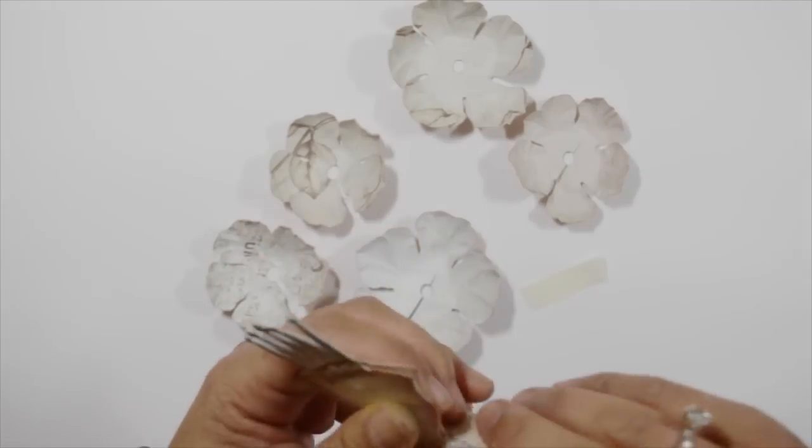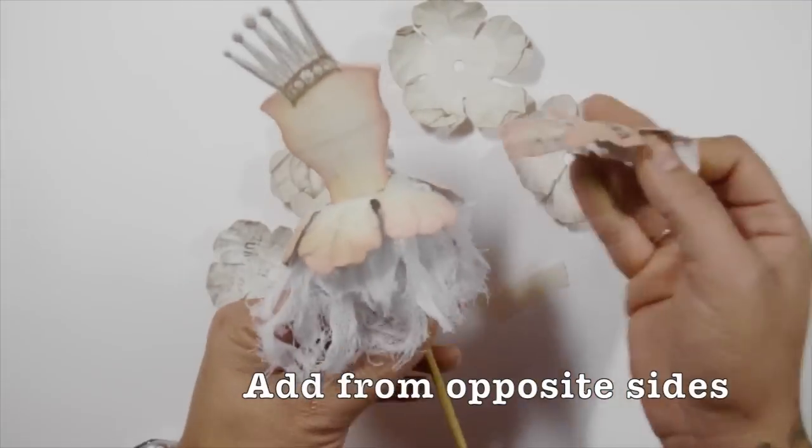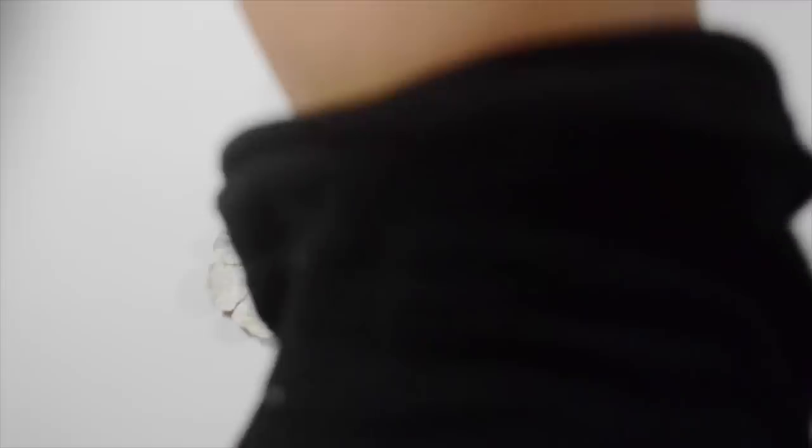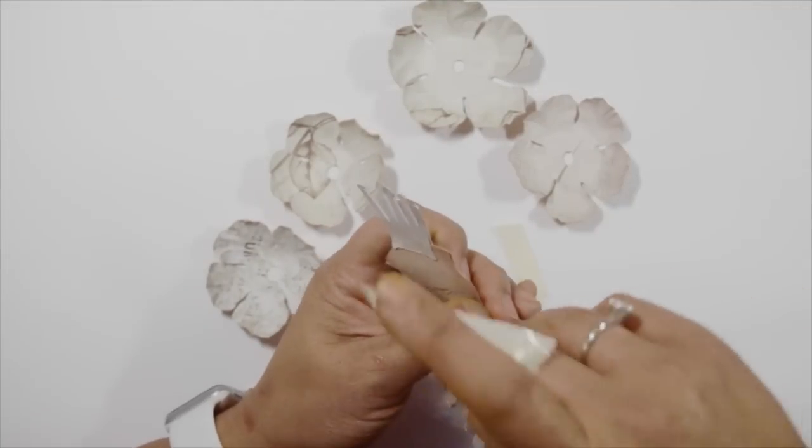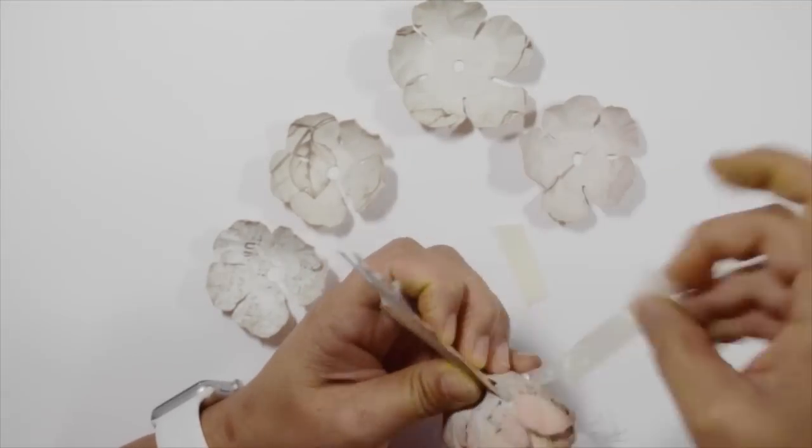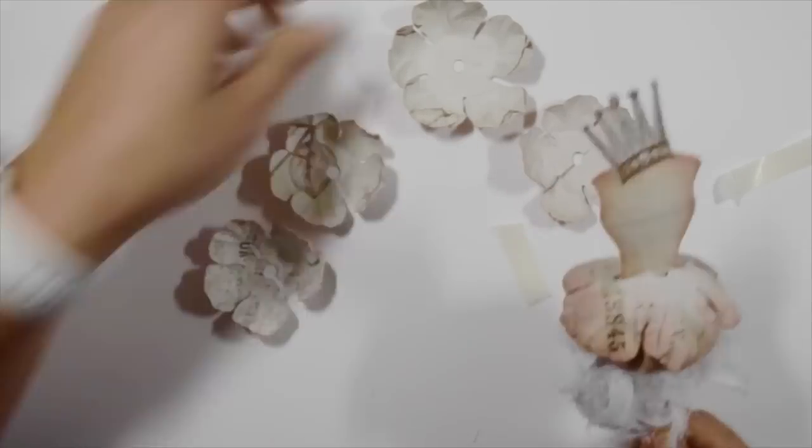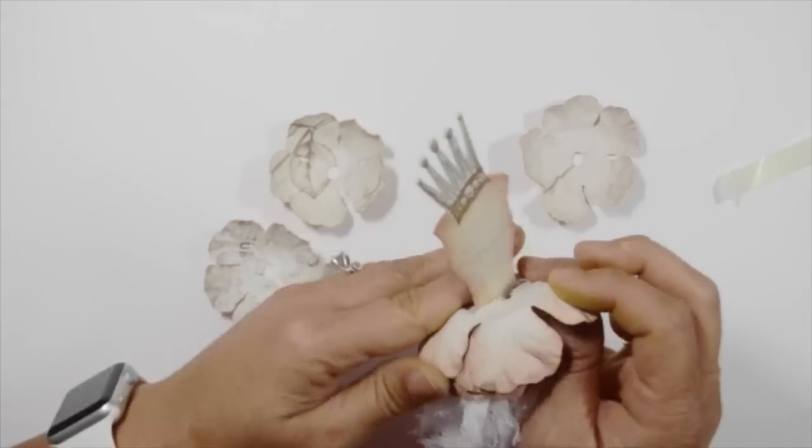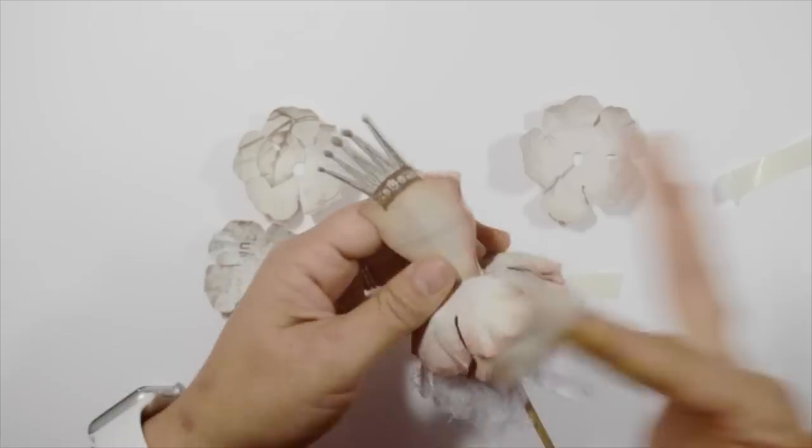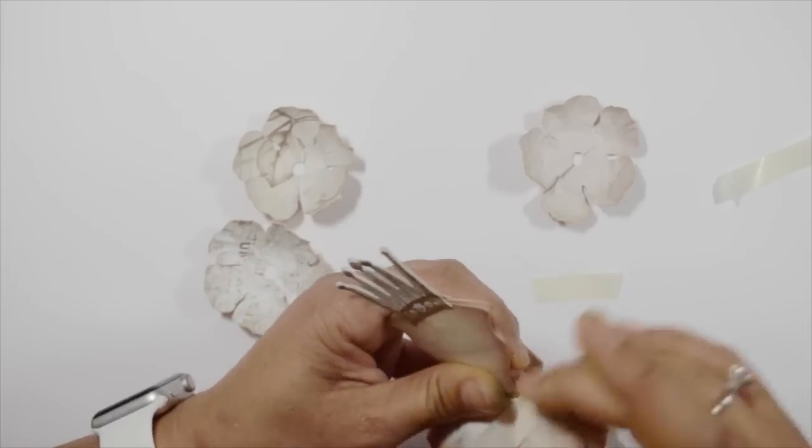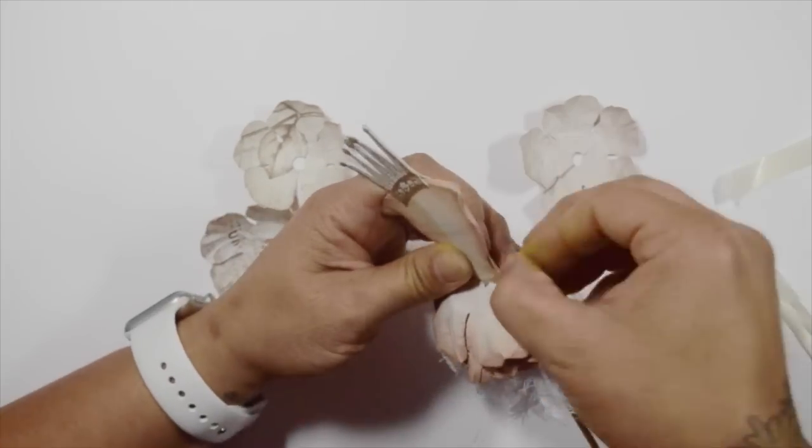Then you're going to take the next flower and you're going to slide it from the opposite side, so the opening will be on the right side of the body and then on the left side of the body. Now you're going to take the next flower and you're going to slide it from the left side, so the opening again is on the right side of the body. I start with the larger petals for the bottom three, and then I'm going to add the smaller petals on top of that.